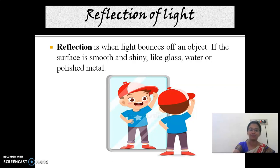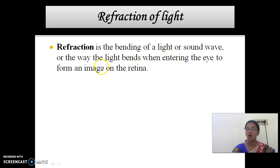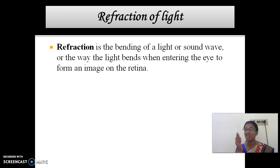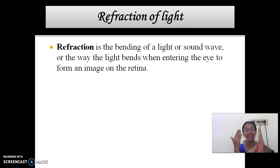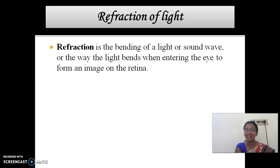Now let's move on to the second property: refraction of light. Refraction is the bending of light waves. Simply, the bending of light is called refraction. Consider if you are walking on the road and there is an obstacle in front of you — you will change your path. Likewise, when light comes and falls on an obstacle, the light rays are bent to another way. This is called refraction.